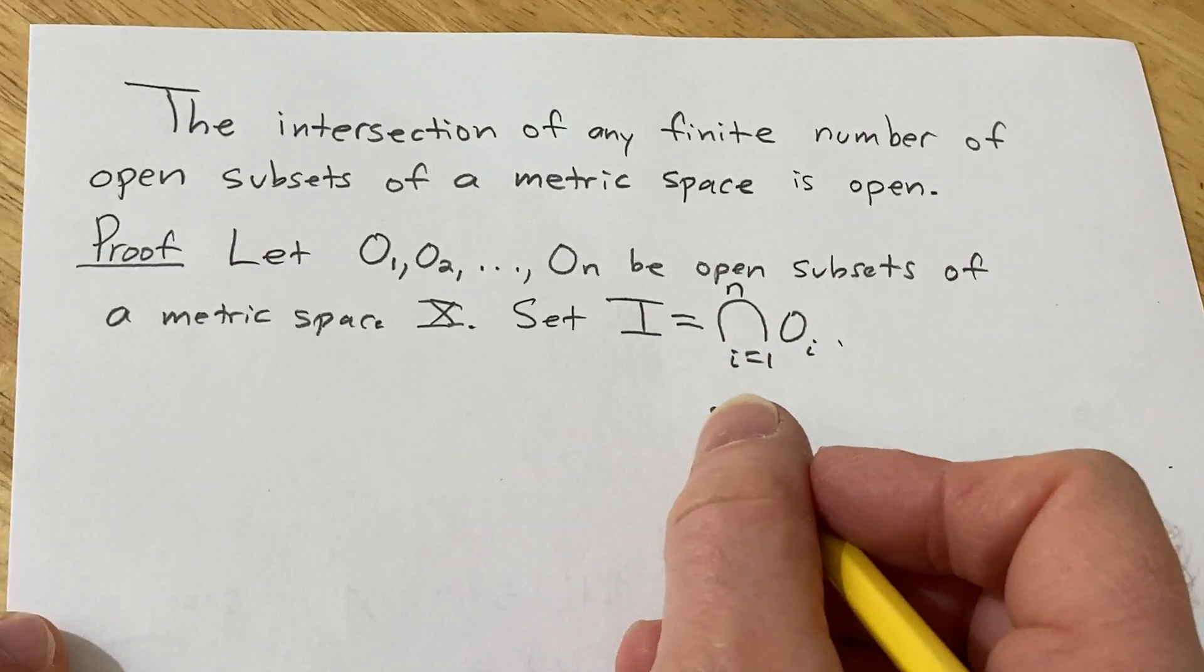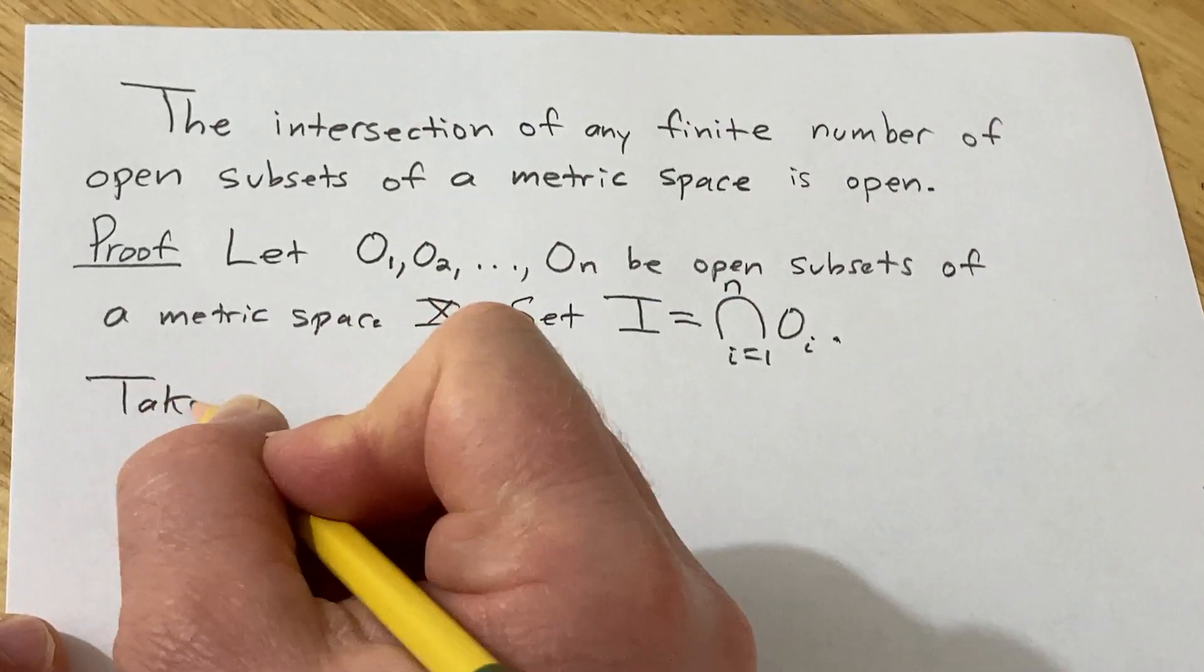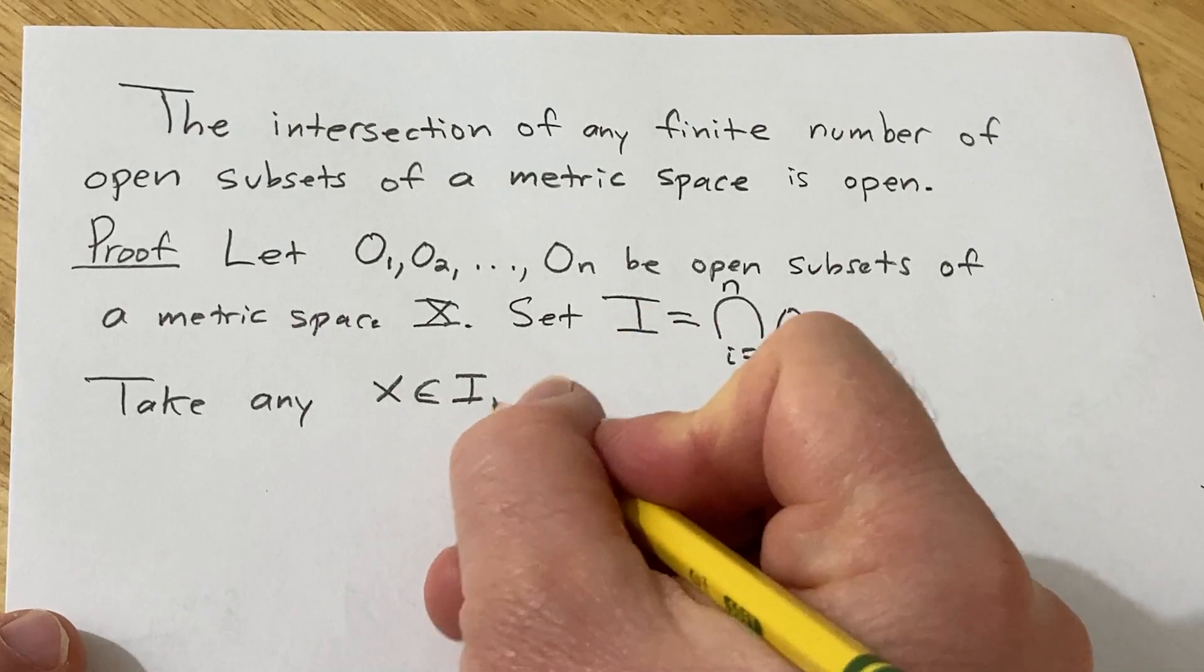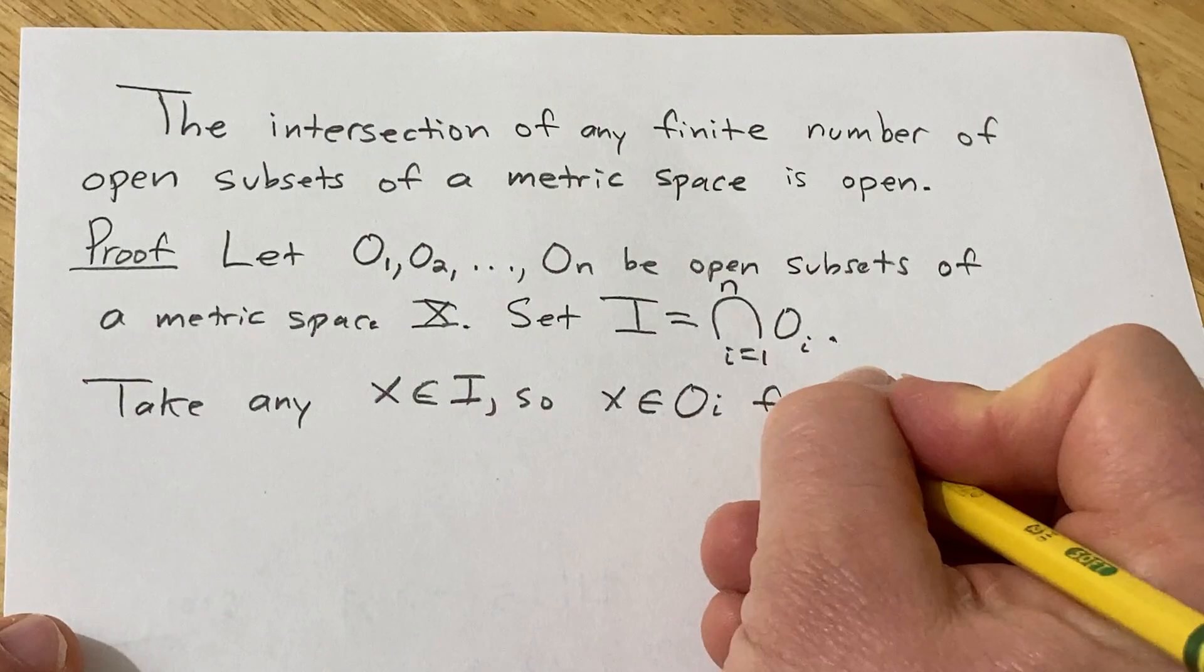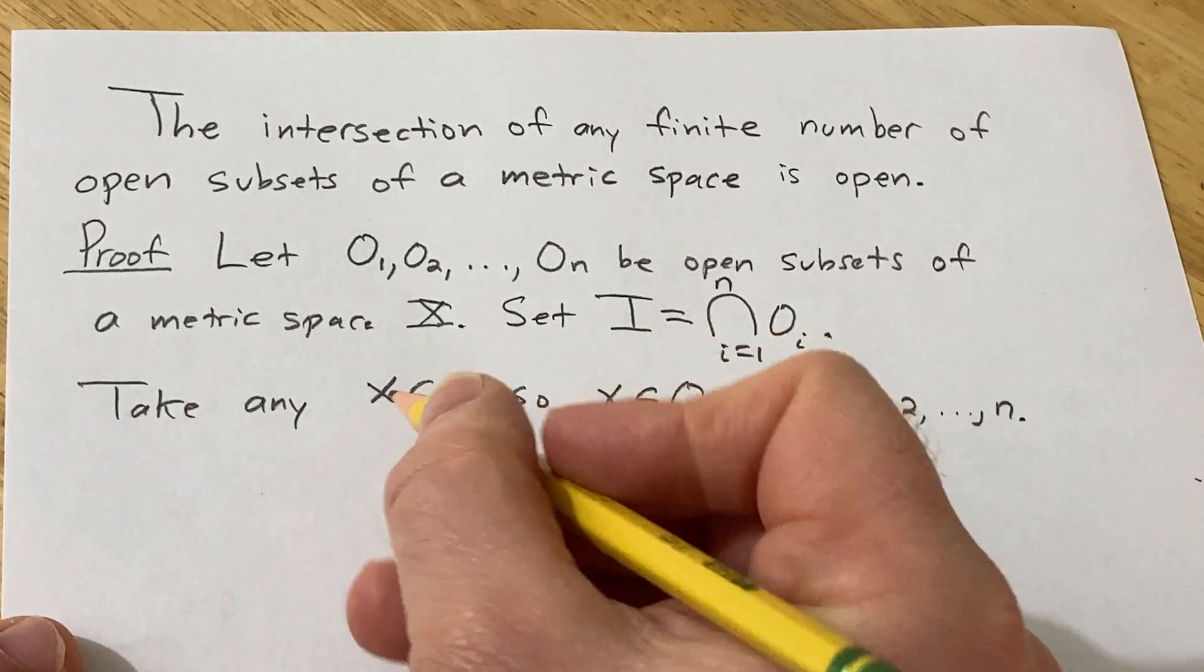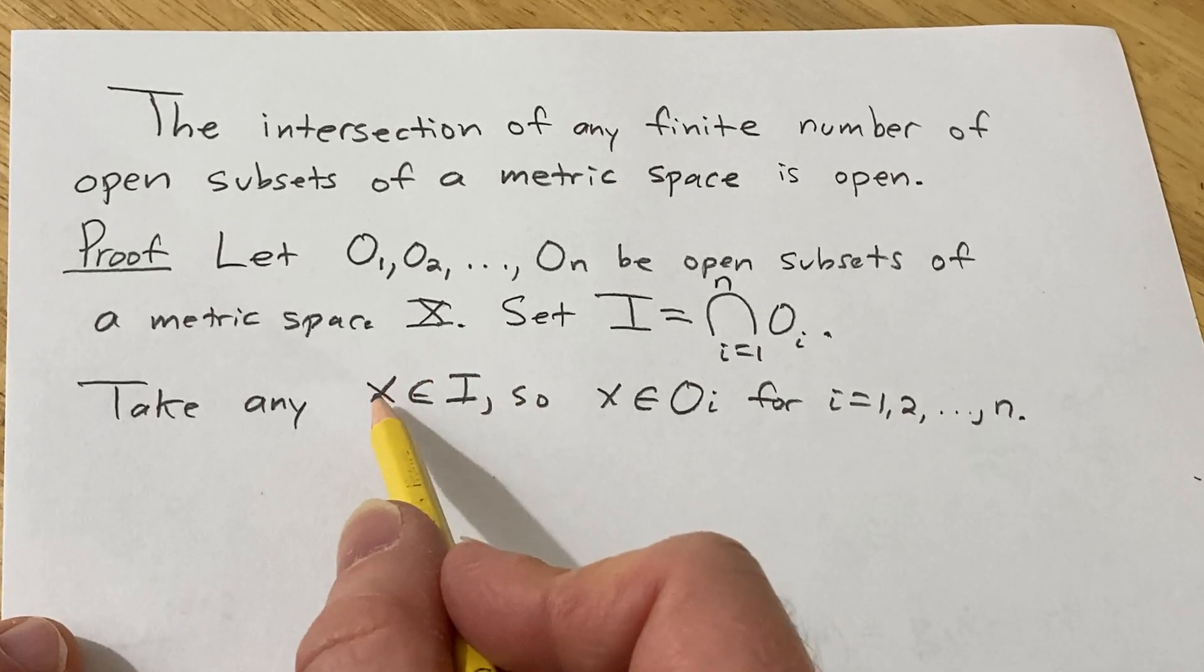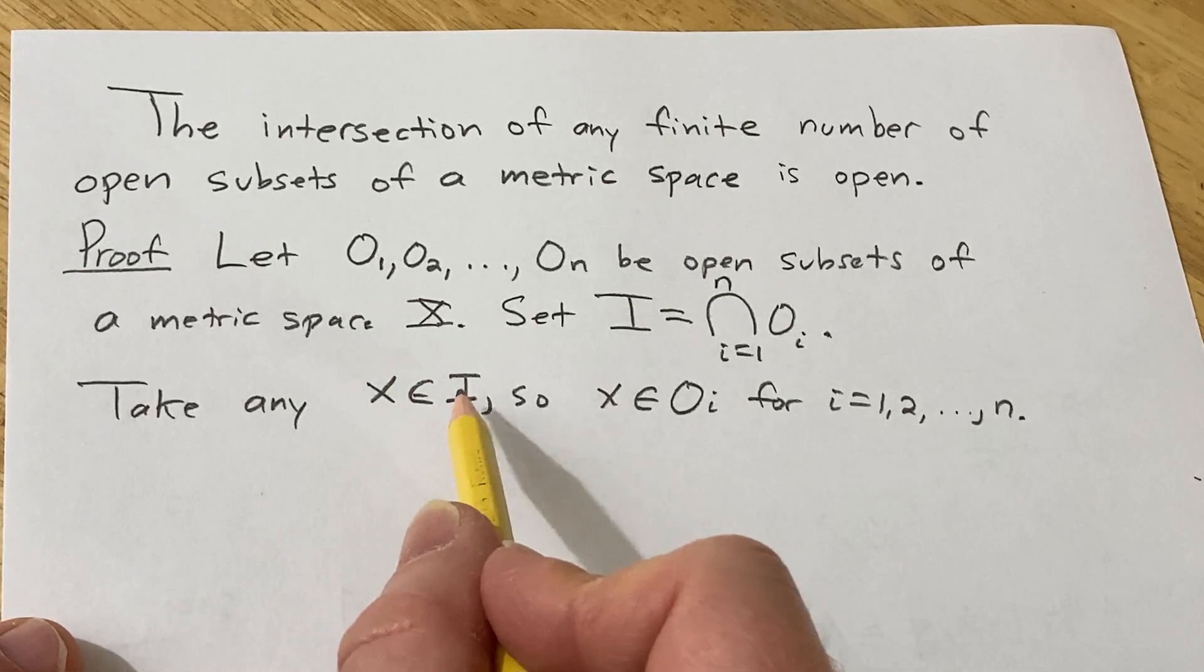And we have to show this is open. So we have to show that every point is an interior point. Take any x in I. So what does that mean? That means that x is in O sub i for i equals 1, 2, etc. And again we have to show that x is an interior point. So we basically have to show that there is an open ball centered at x of positive radius that's entirely contained in this set.